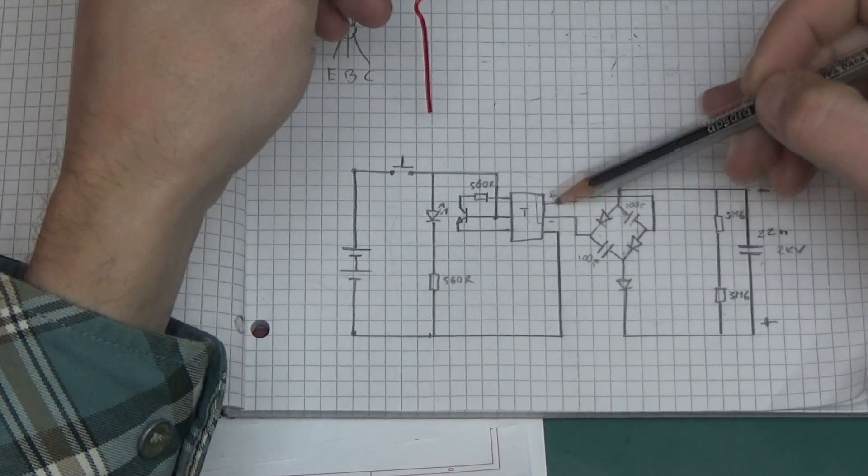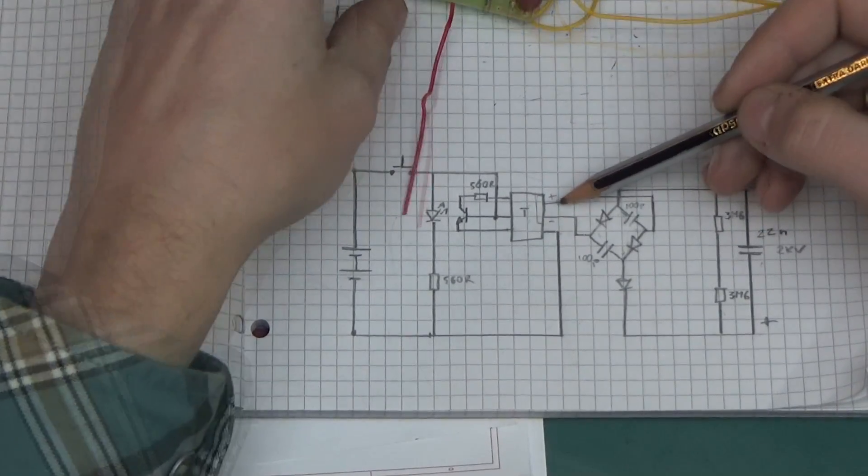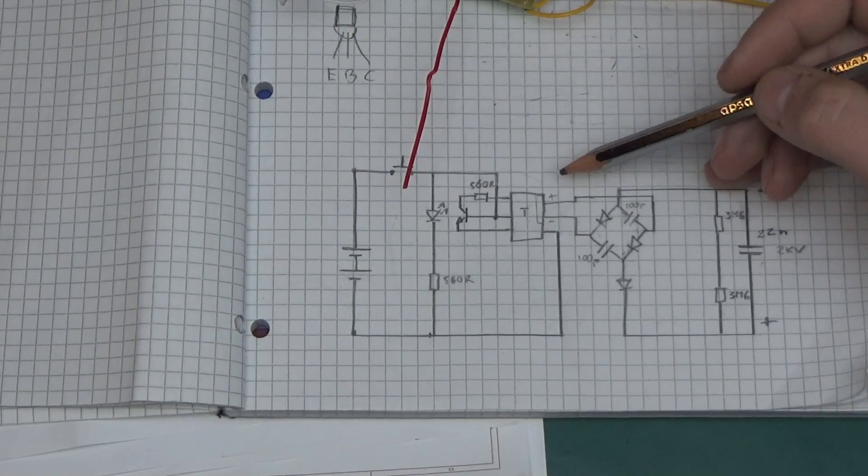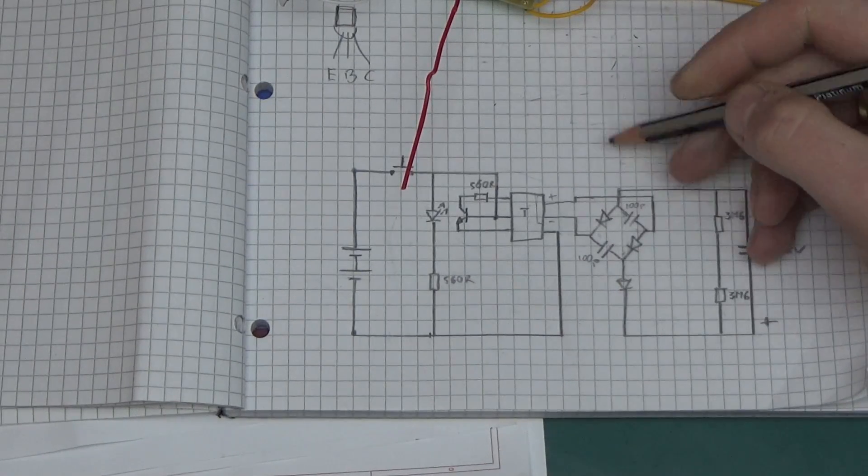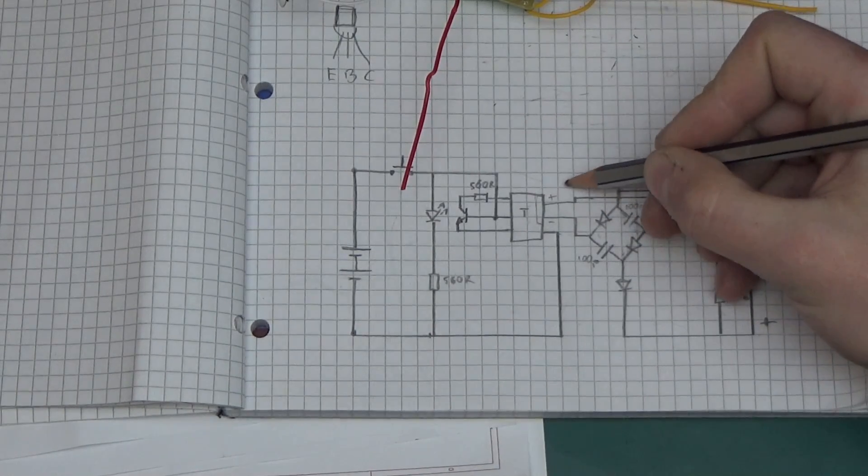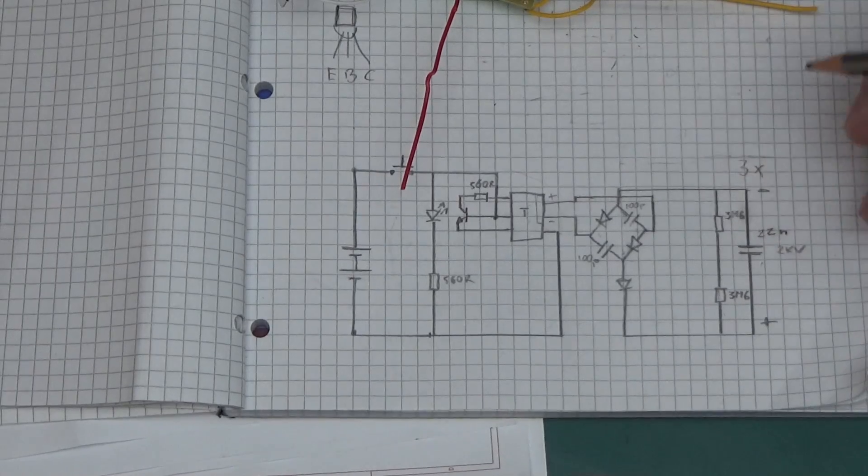On the output we've got an AC high voltage, probably about 500 volts or so, because this claims to be 1500 volts and this circuit here is a voltage tripler. Whatever AC input you have on this point, you will have three times on the output.